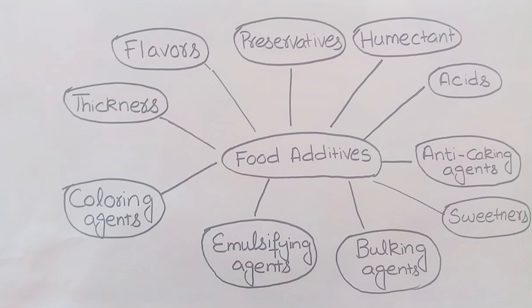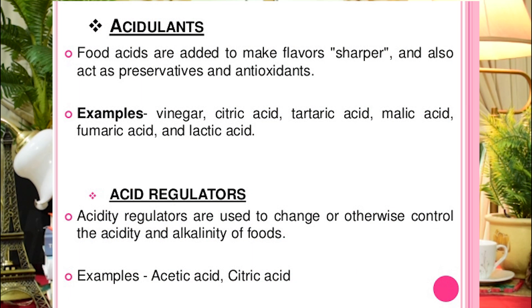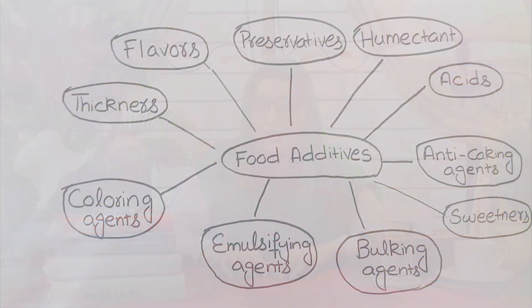Acids are used for sharp or sour taste in food. They also work as preservatives and antioxidants, playing an important role. Different acids are added to different foods. Common examples include vinegar, citric acid, and ascorbic acid. These are all examples of Acids.